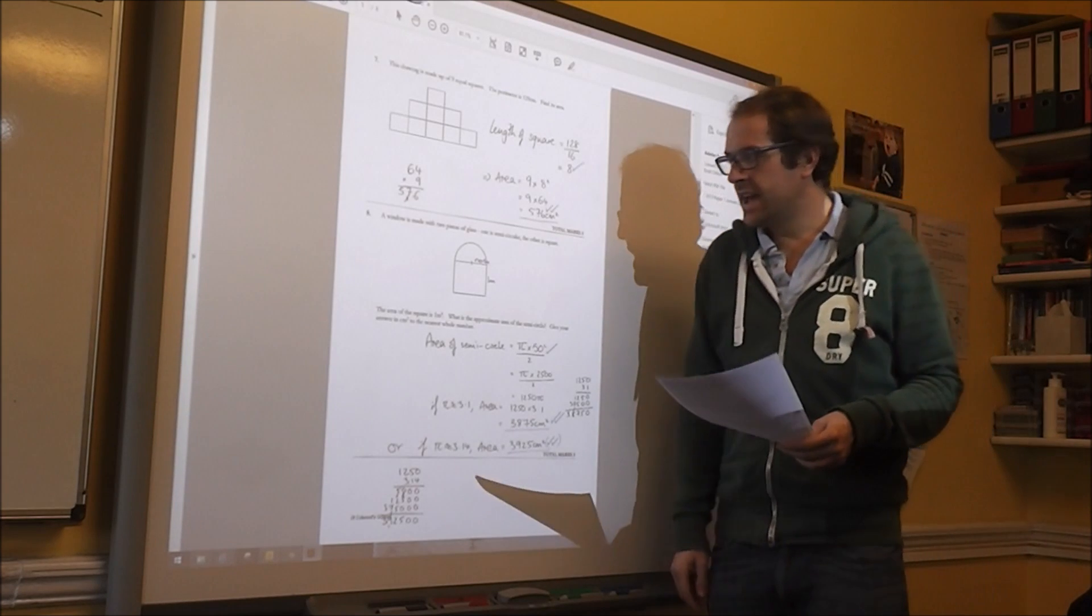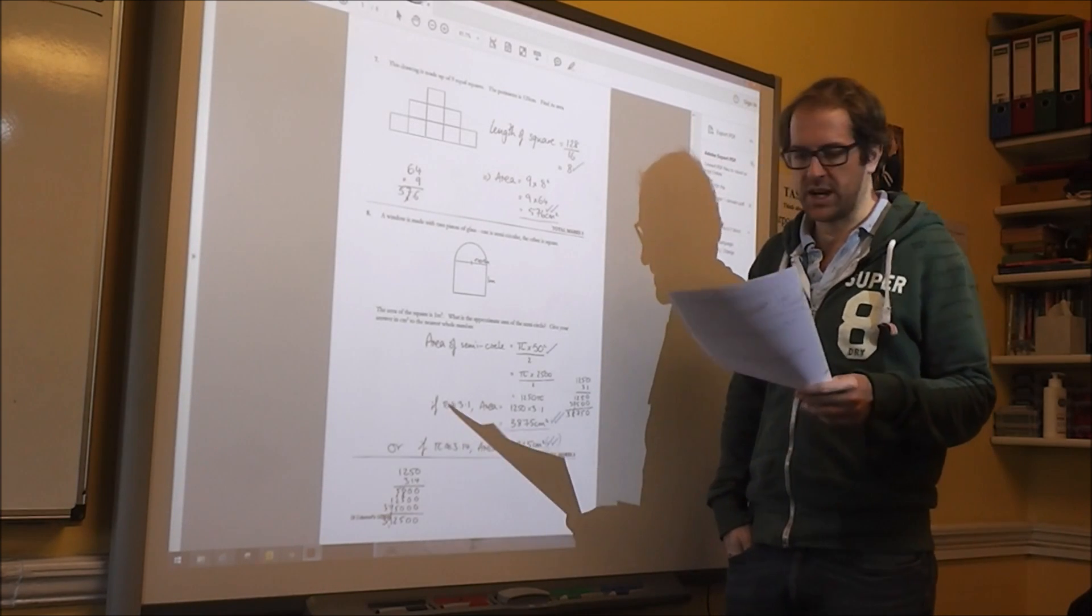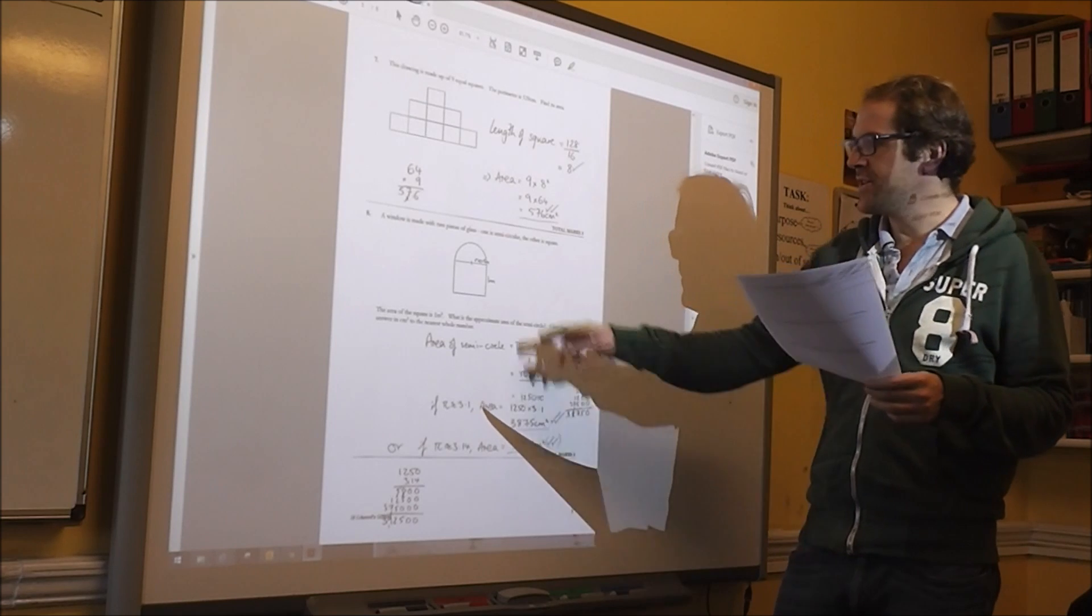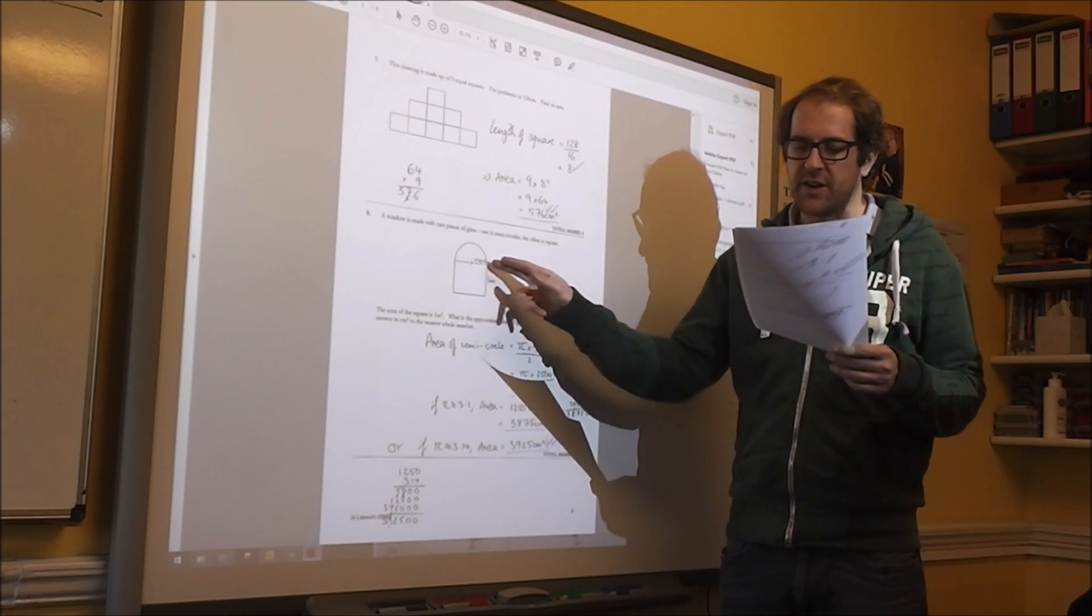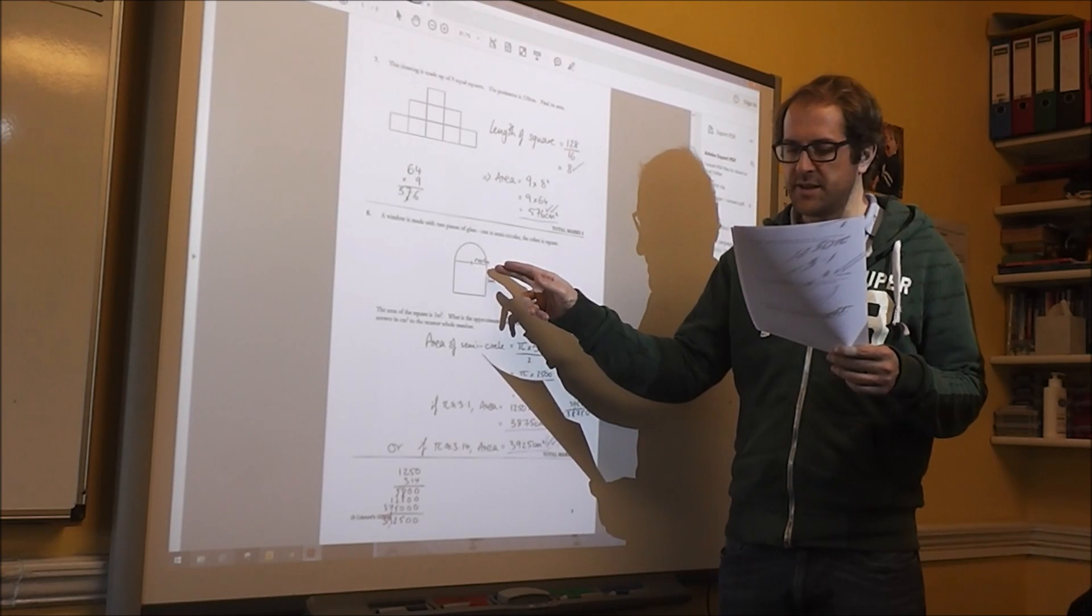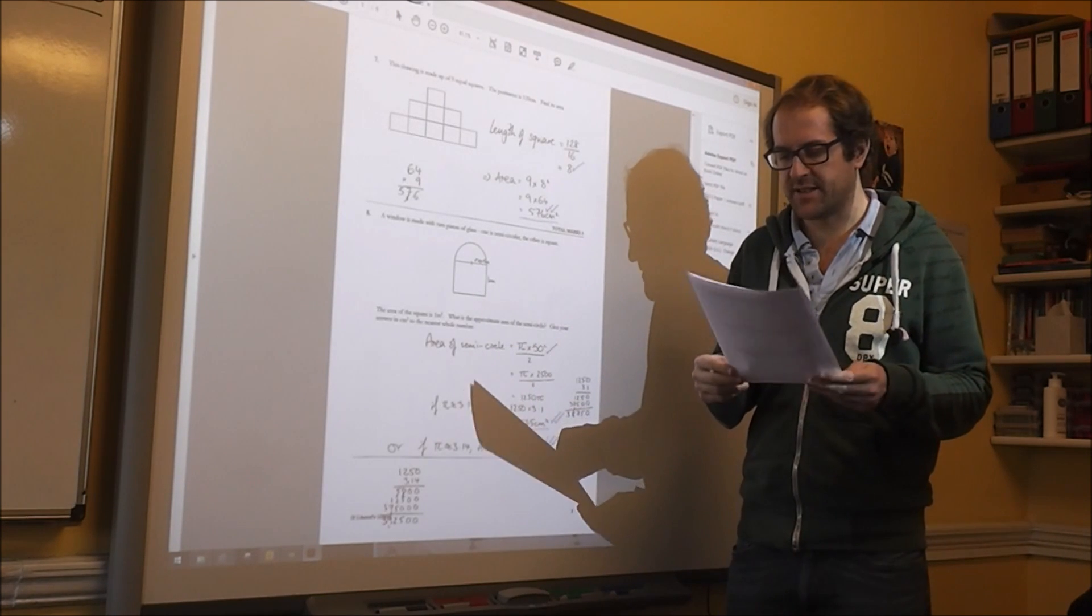Number 8, we've got a window, 2 pieces of glass. The area of the square is 1m squared. So the first thing you can do is write down the radius, which is 0.5m or 50 cm.